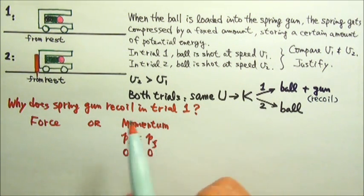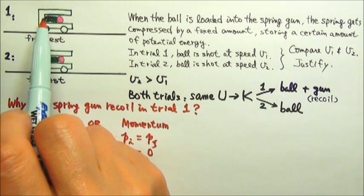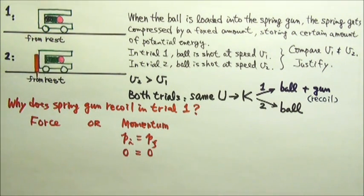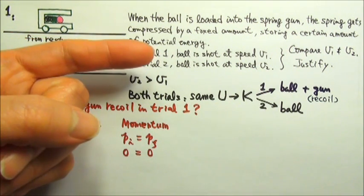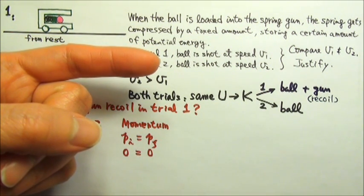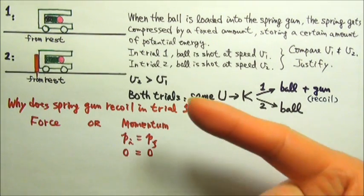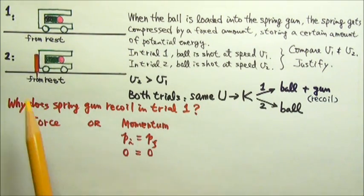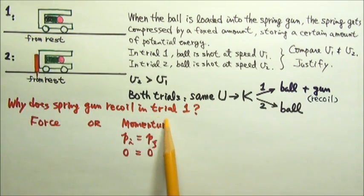That means in the end, the momentum of the ball and the momentum of the spring gun must be equal and opposite. So the ball gets a momentum to the right, and the spring gun must have a momentum to the left, which means the spring gun recoils in trial 1.